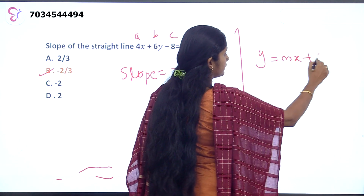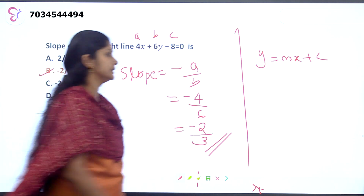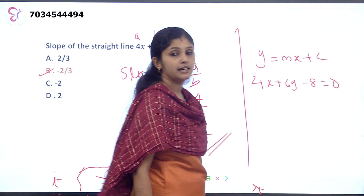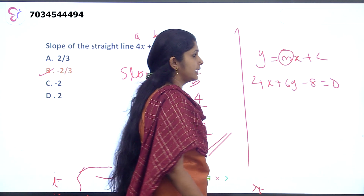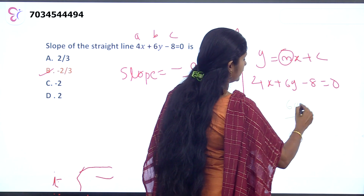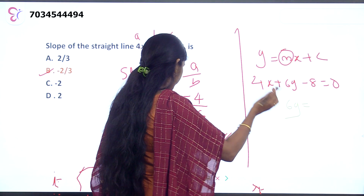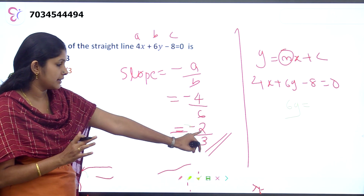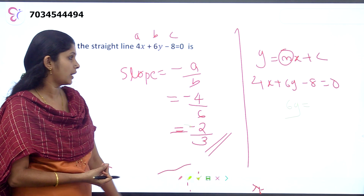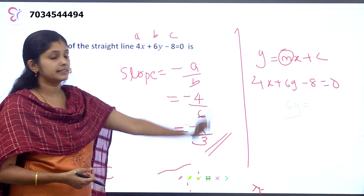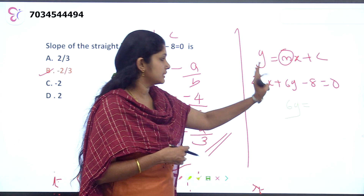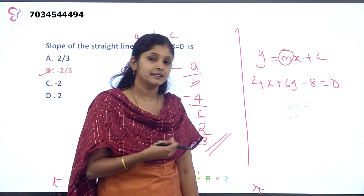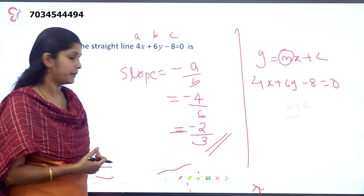The equation is y equals mx plus c. We rearrange 4x plus 6y minus 8 equals 0 into this form. We isolate the y term, and the coefficient of x after rearranging gives the slope. If we want to make the coefficient of y equal to 1, then the coefficient of x becomes the slope.